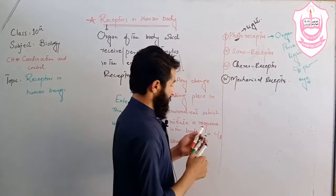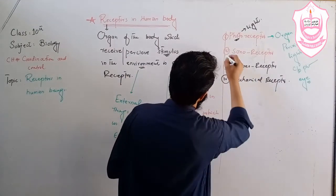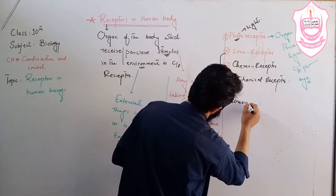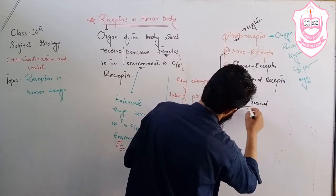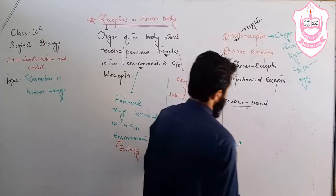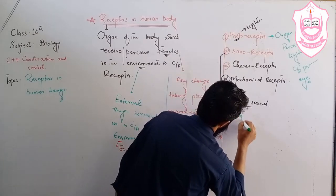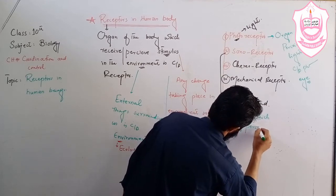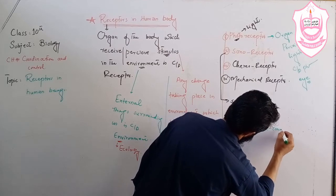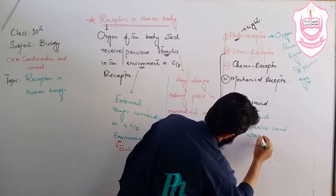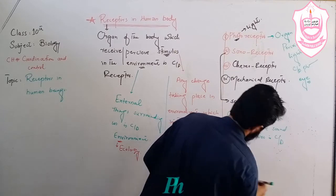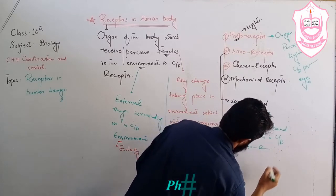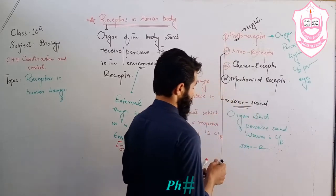Now coming toward the sonoreceptor. Sono means sound, so the organ which perceives sound waves is called a sonoreceptor. For example, the ear is a sonoreceptor.